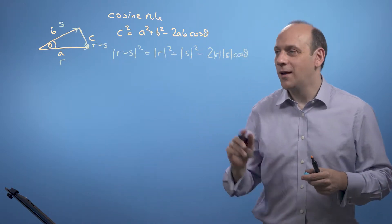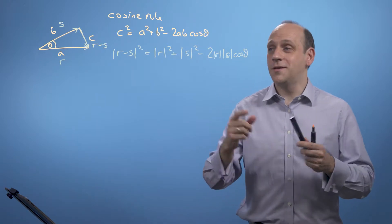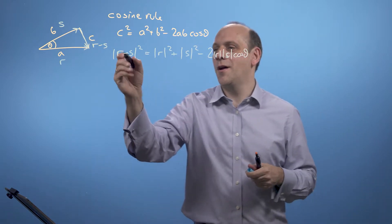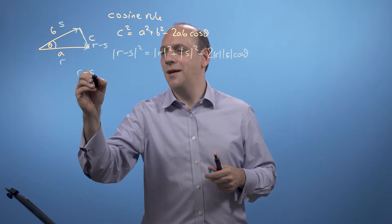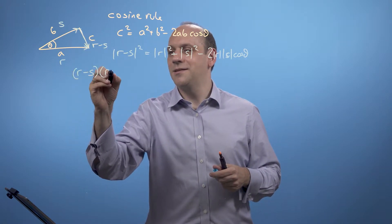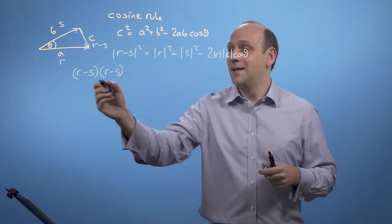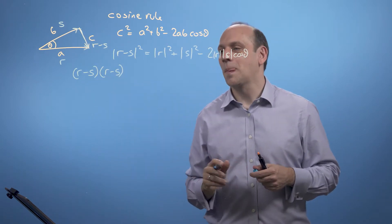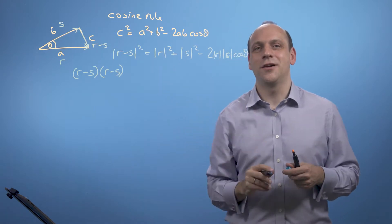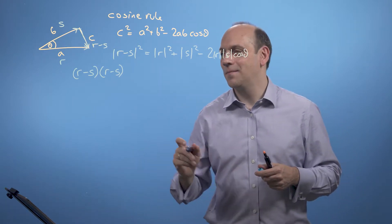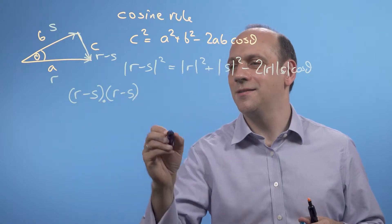Now, here's the cool bit. We can multiply this out using our dot product, because we know that the size of r minus s squared is equal to r minus s dotted with itself. And we can multiply that out, and then we'll compare it to the right-hand side. So r minus s dotted with r minus s.